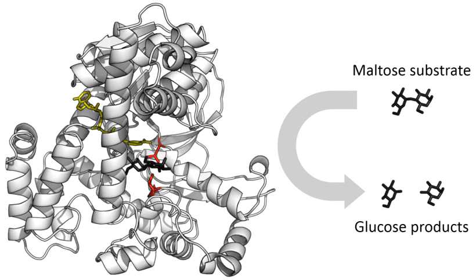Only a small portion of their structure is directly involved in catalysis: the catalytic site. This catalytic site is located next to one or more binding sites where residues orient the substrates. The catalytic site and binding site together comprise the enzyme's active site. The remaining majority of the enzyme structure serves to maintain the precise orientation and dynamics of the active site. In some enzymes, no amino acids are directly involved in catalysis; instead, the enzyme contains sites to bind and orient catalytic cofactors.